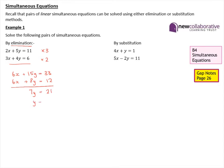That tells us that y is equal to 3. We can then substitute our value of y into either the first or second equation — I'm going to choose the first one. So we've got 2x plus 5y, which is 15, equals 11. So 2x is equal to negative 4 and x is equal to negative 2. The solution is x equals negative 2, y equals 3.